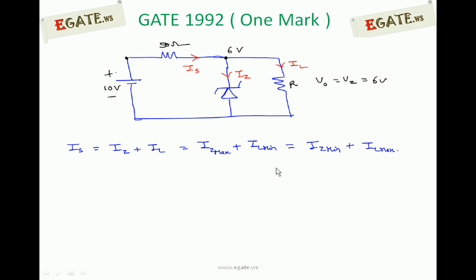Out of these three equations, which should we use? We're interested in calculating minimum value of R. For constant output voltage, R minimum implies Il maximum. So we must use the equation with Il maximum: Is equals Iz minimum plus Il maximum. This equation we will use.